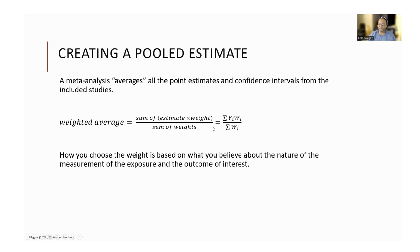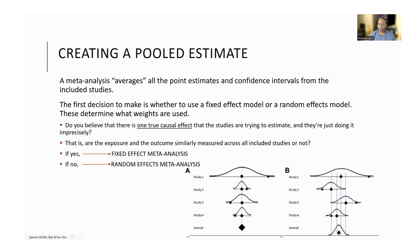You need to make a decision about the weights that you're assigning to each study. There are two common approaches: the fixed effect and the random effects. The one you choose will depend on your understanding of the way the studies measure exposure and outcome, amongst other things. Your pooled estimate is basically an average of all the point estimates and their confidence intervals, and you can use a fixed effect model or a random effects model.